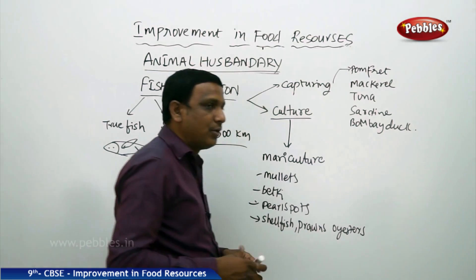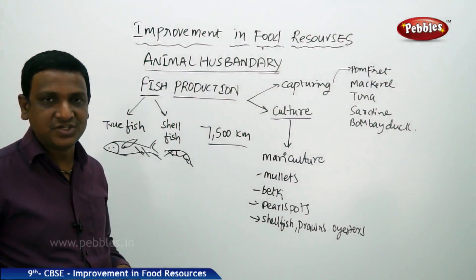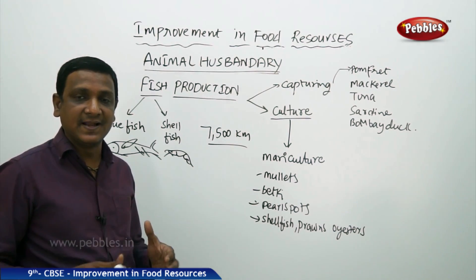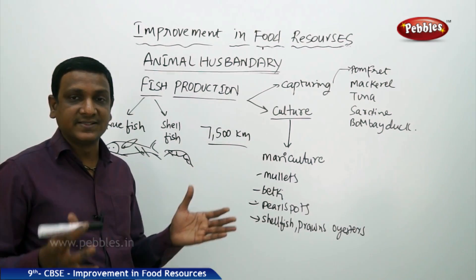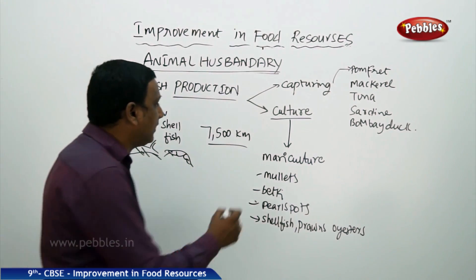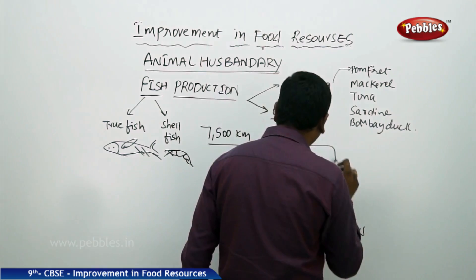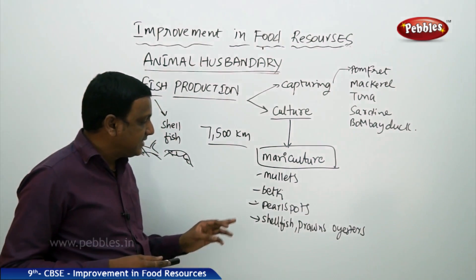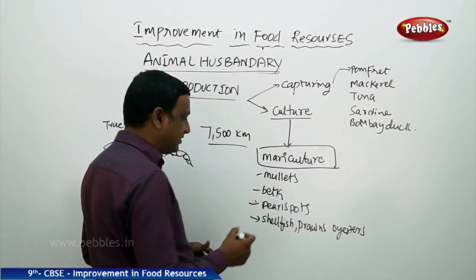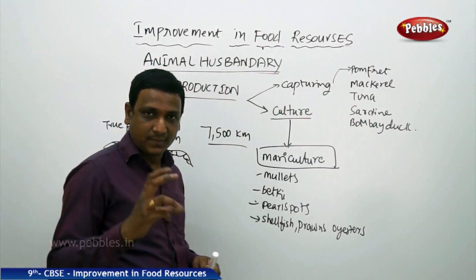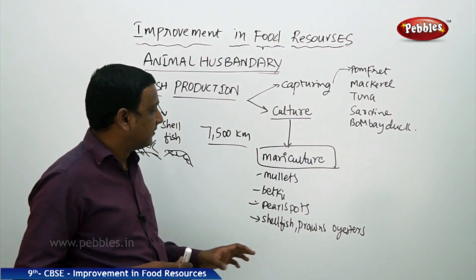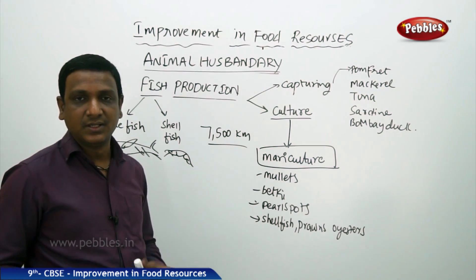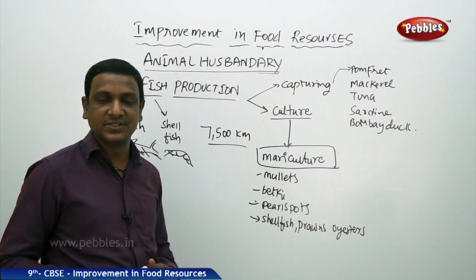There is a lot of demand for fish, so fish are also being cultured. Freshwater fish can be cultured in ponds and lakes. In the sea itself, certain areas are marked for fish culture, which is called mariculture — marine culture. Under mariculture, fish like mullets, bhetki, and pearl spots, as well as shellfish like prawns and oysters for pearls, are grown.